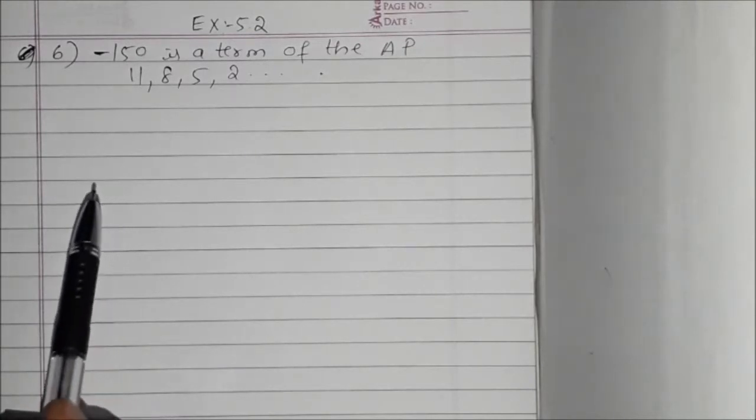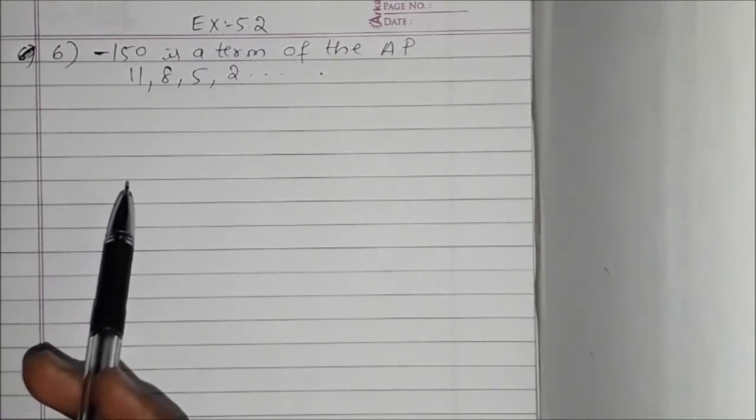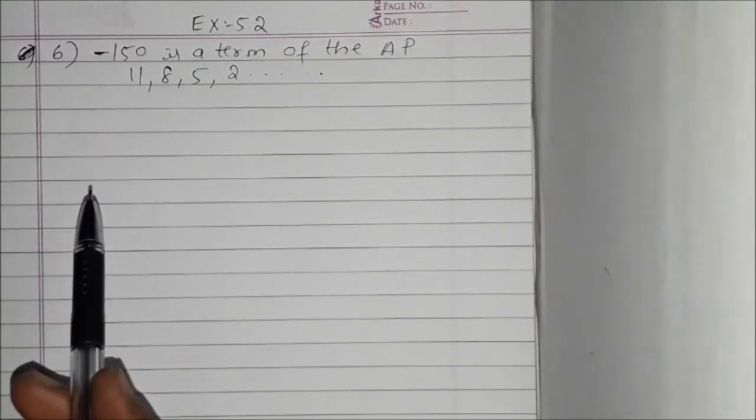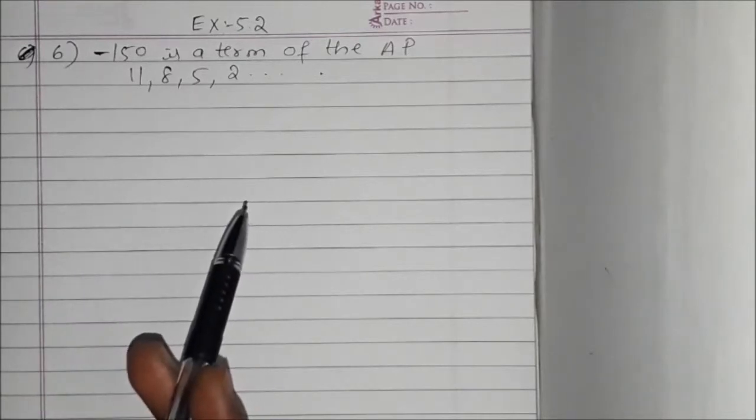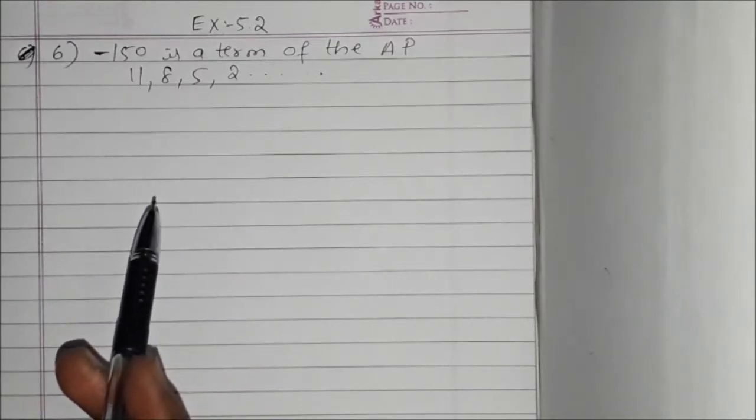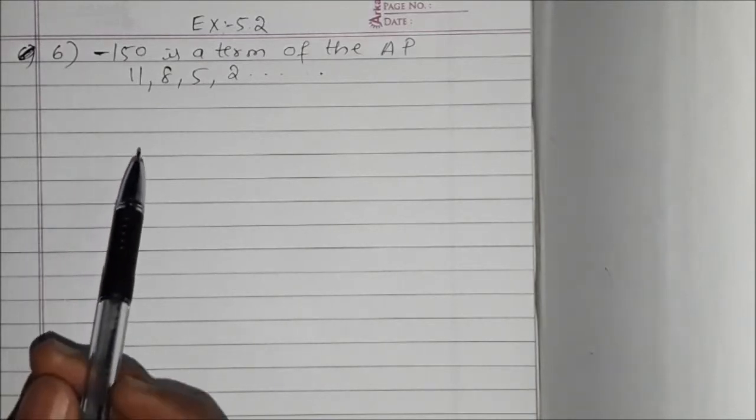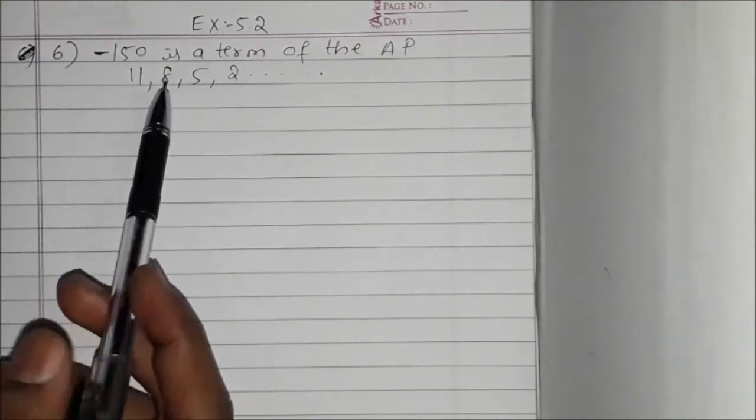If N is in the form of a fraction, then minus 150 is not a term. Suppose N is in the form of integers, positive or negative, then we can say that it is a term of the AP.